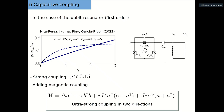For the qubit-resonator case, things are simpler since the first-order approximation works well. In this plot, the coupling of the qubit versus the qubit gap is shown alongside the coupling relative to the resonator energy. At some point, there is a crossing where the resonator energy omega-r equals one of the qubit gaps. At this point, you can explore a model with the same energy for qubit and resonator, and the coupling is ultra-strong, reaching 0.15. Adding also magnetic coupling, we can show something unstudied in superconducting circuits: ultra-strong coupling in two directions between a qubit and a resonator, which opens a new region of quantum optics.